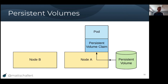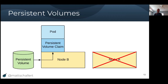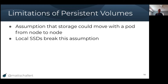For a long time with persistent volumes, there was an assumption that storage could just move around with pods. Say your pod was running on node A and had some persistent volume attached to it. If node A failed, Kubernetes would take care of rescheduling your pod onto node B, and it would be able to attach that same persistent storage to the new pod on a new node.